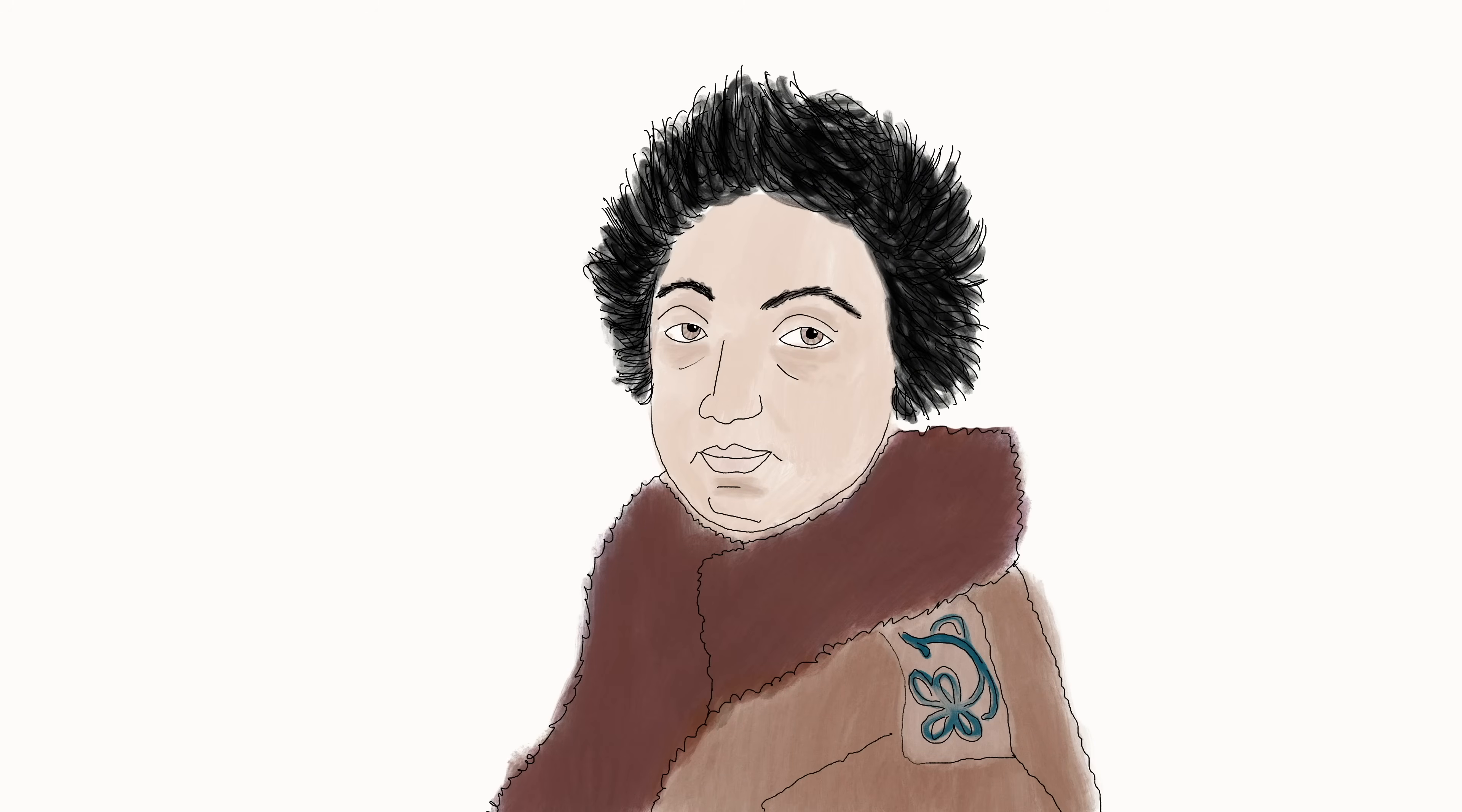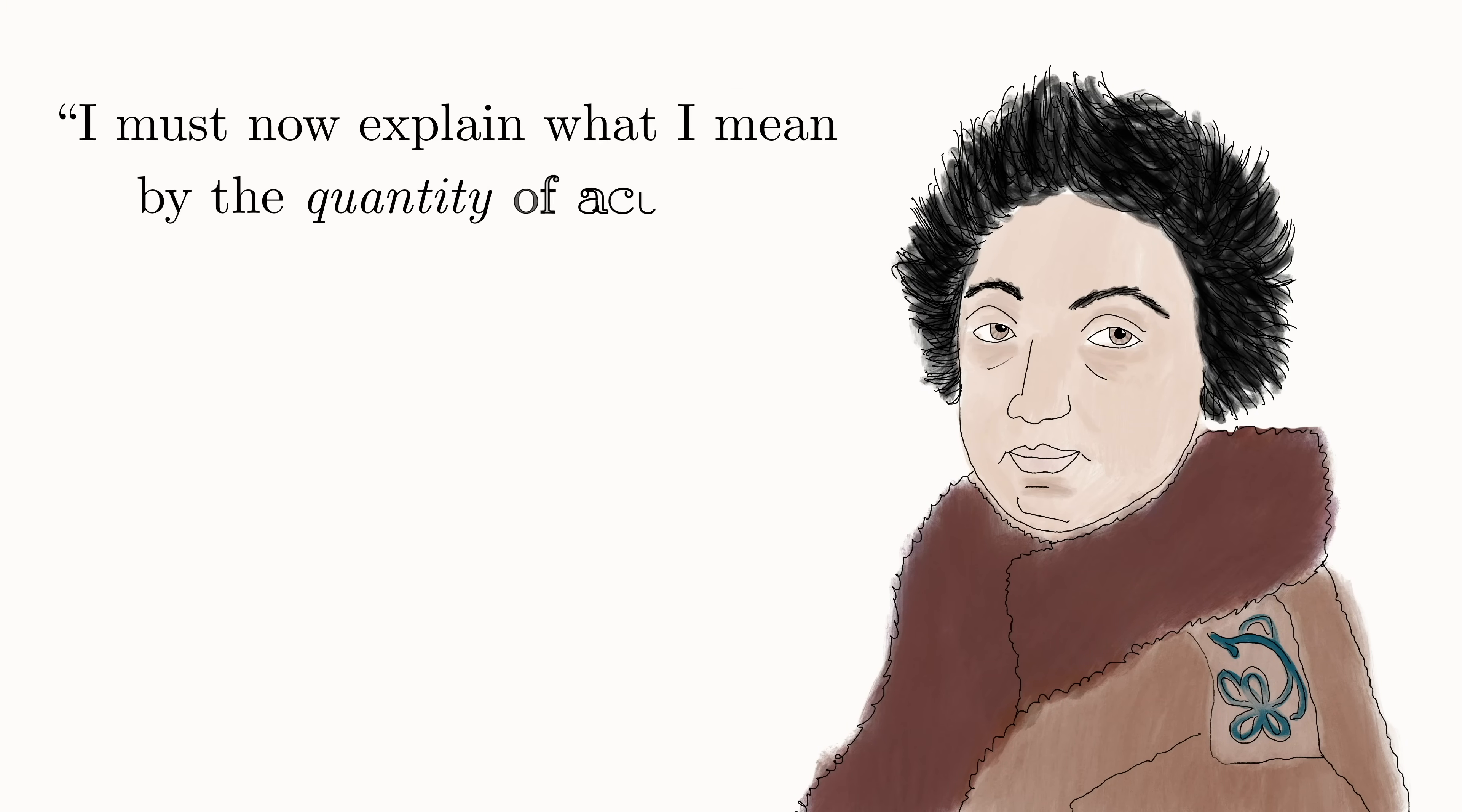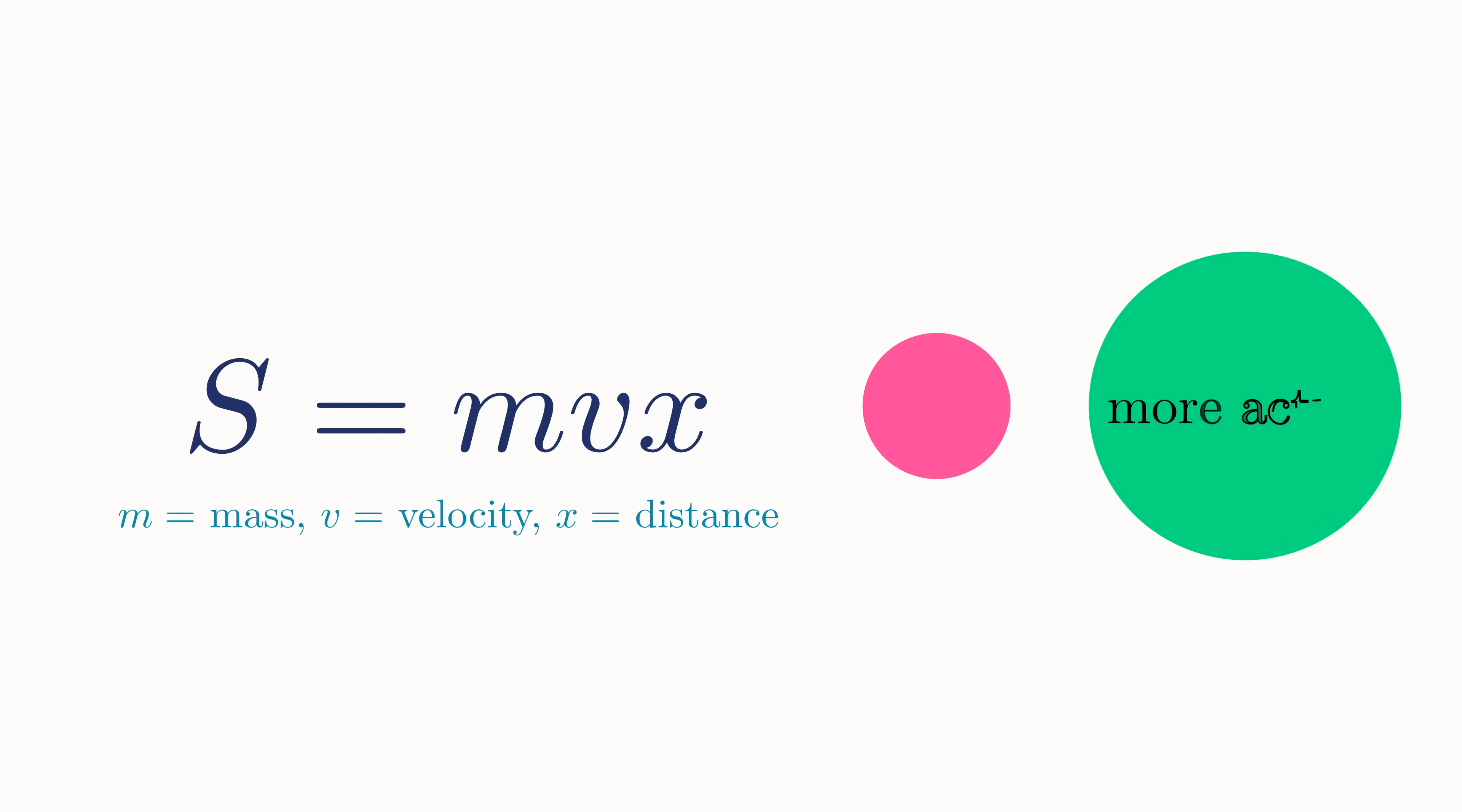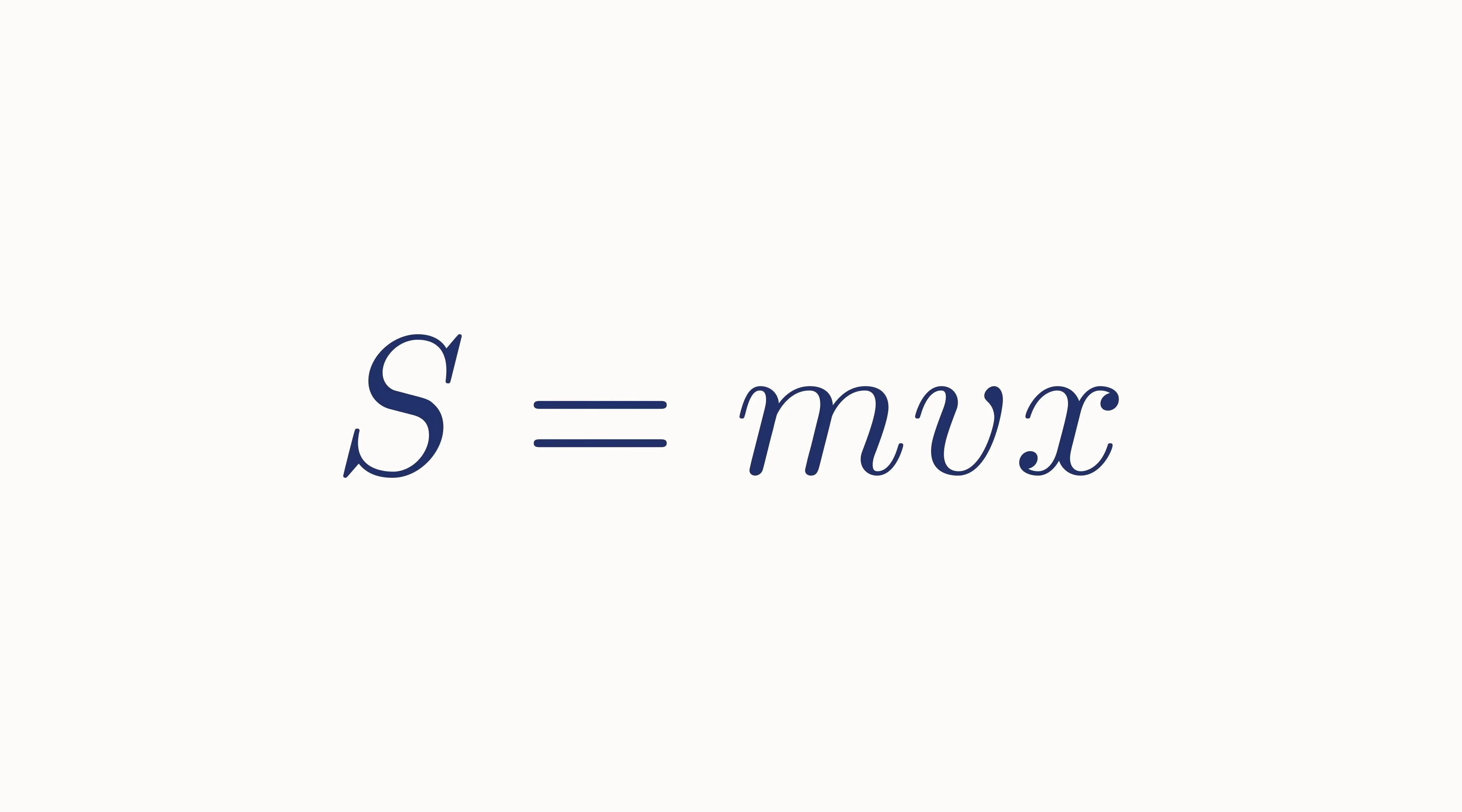The action was originally defined in 1744 by the French mathematician Pierre-Louis Maupertuis. Motivated by a desire to unify optics and mechanics under a single principle, he defined the action of an object as the mass times the velocity times the distance traveled. Although it's admittedly quite an abstract concept, you can intuitively see that all other things being equal, an object with more mass has more action. And similarly, an object that moves faster or farther has more action. So for any part of an object's motion, we can define its action.